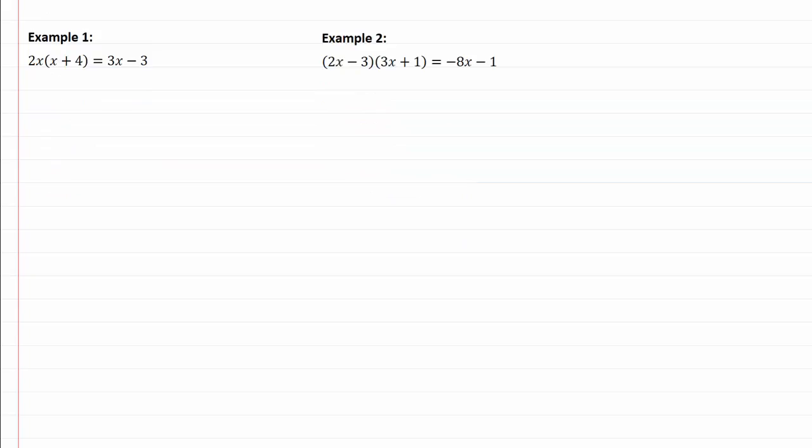So let's take a look at our two examples and see what I'm talking about. I'm going to distribute that 2x through here in our first example, so that's going to give me 2x squared plus 8x equal to 3x minus 3.